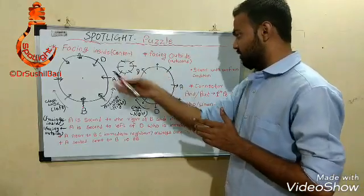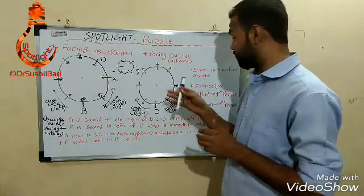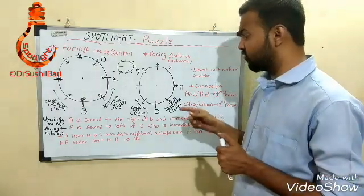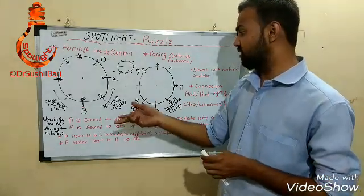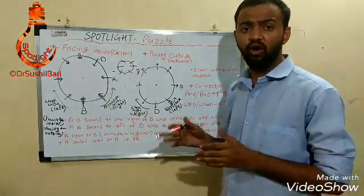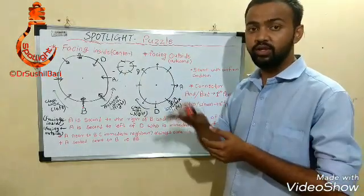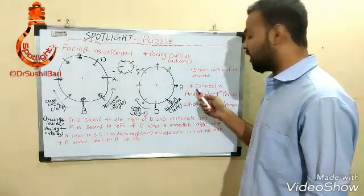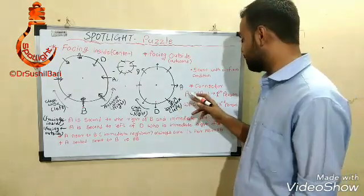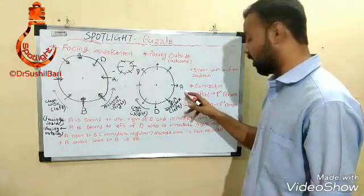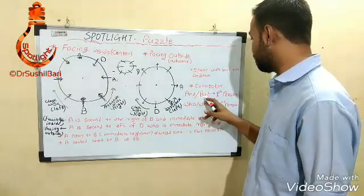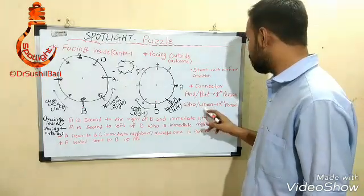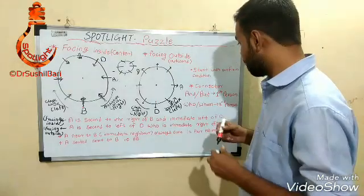To solve the puzzle, start with the confirmed condition — the statement that is referred to in the next two or three statements, which helps you begin the puzzle. The connector words are the most important factor. 'And' and 'but' generally refer to the first person in the statement, while 'who' and 'whom' refer to the second person.